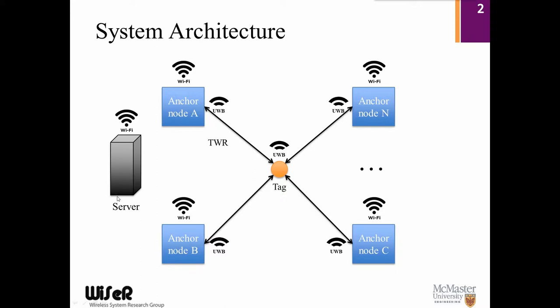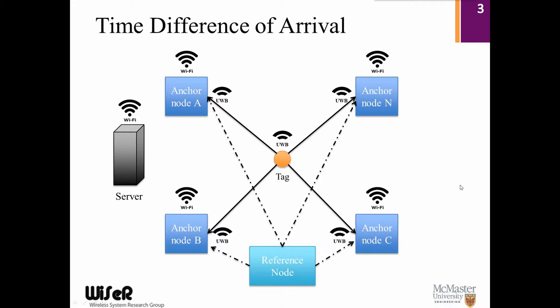We applied two-way ranging and time difference of arrival approaches in this system. In two-way ranging, tags will visit all anchor nodes in turn, and anchor nodes will upload all the information to the server. Then the server can estimate the tag position. In the TDOA approach, we need to add one more reference node to the system so that all the anchor nodes can be synchronized. Then the TDOA can be obtained.